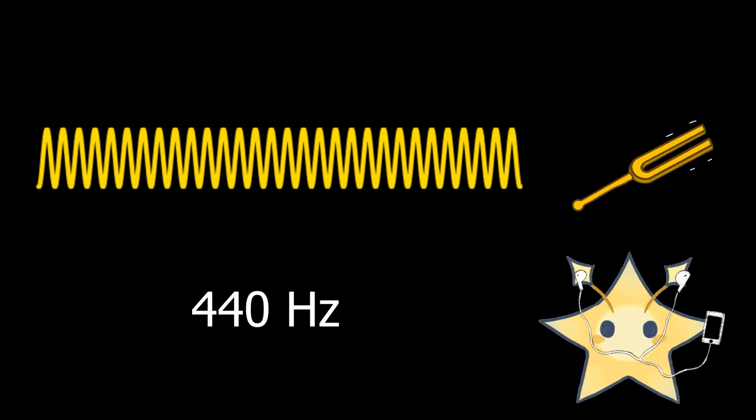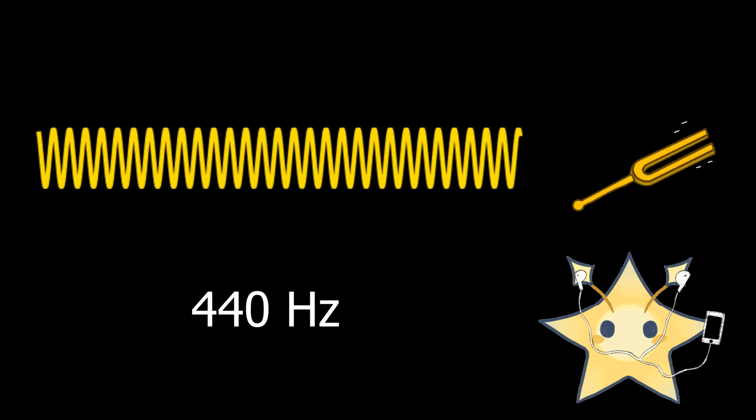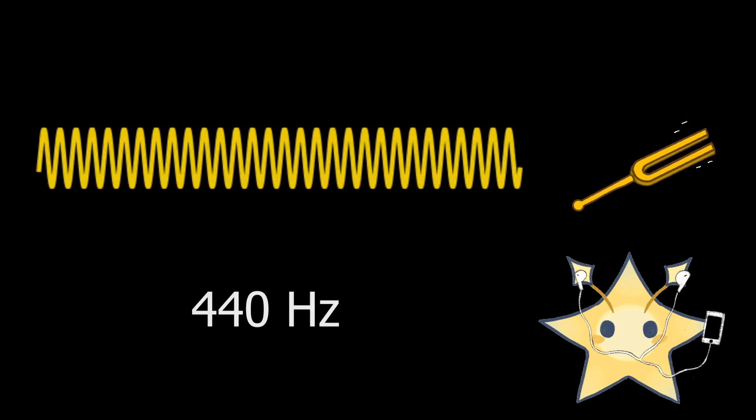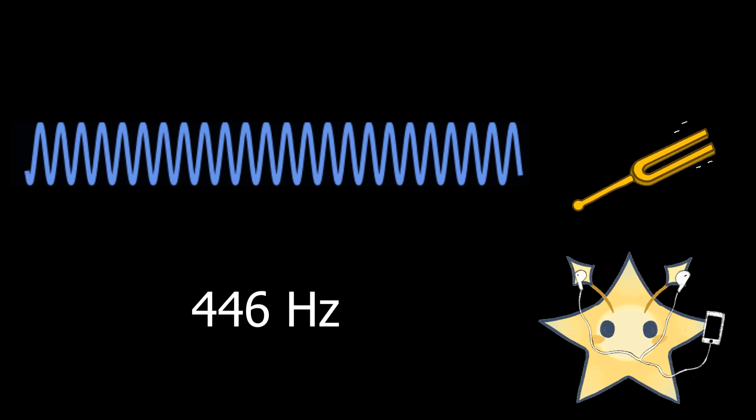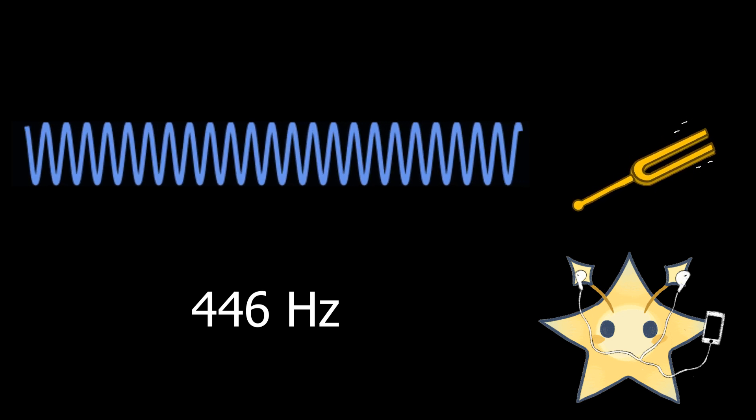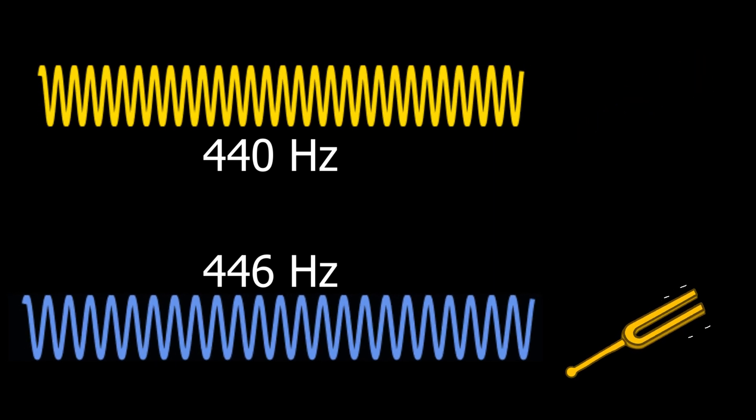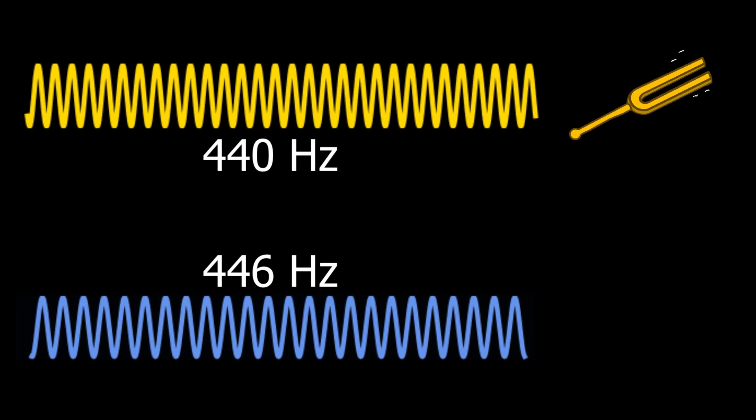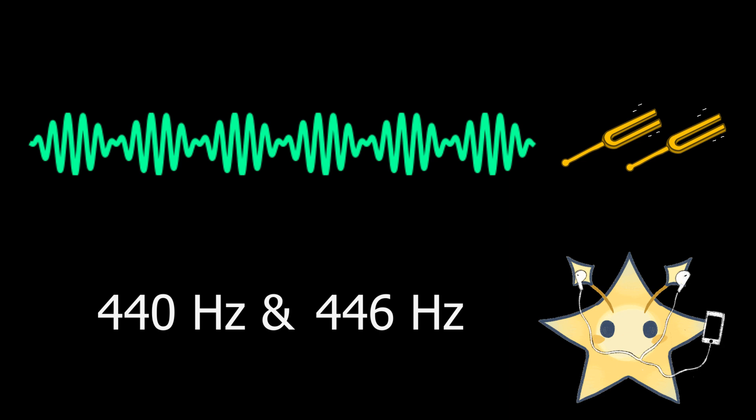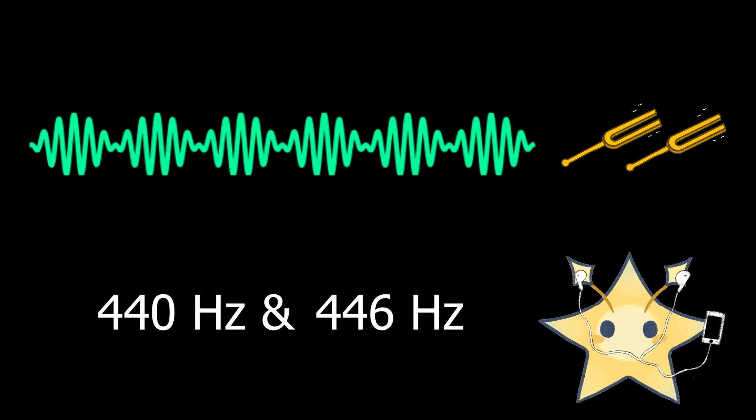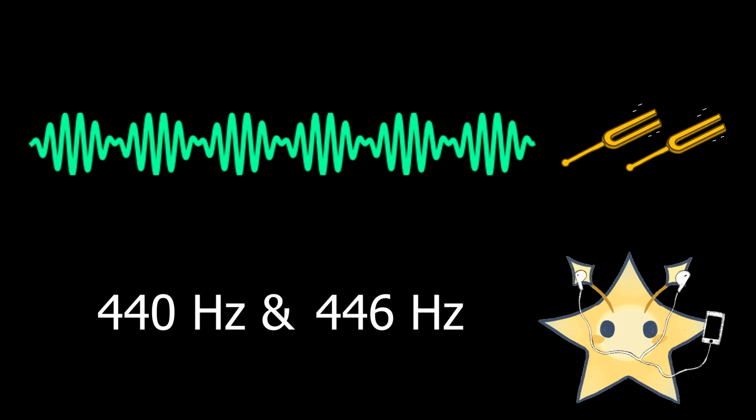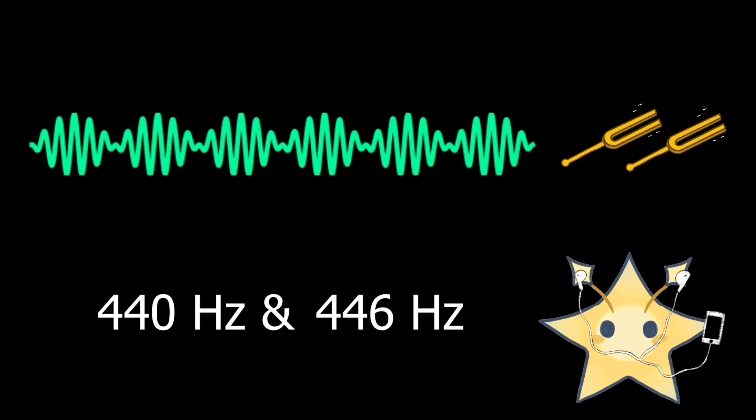For example, here is a sound wave at 440 vibrations per second, or hertz. And here's the sound at a slightly higher frequency, 446 hertz. When played separately, they're almost indistinguishable. But if we mix these two sound waves together, we can hear an audible beating pattern of 6 beats per second, or 6 hertz.